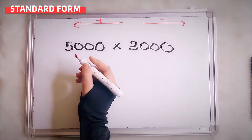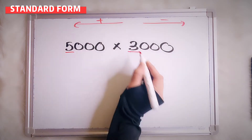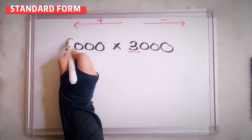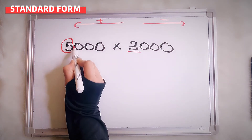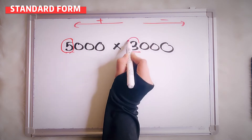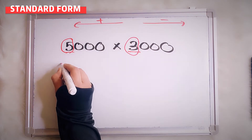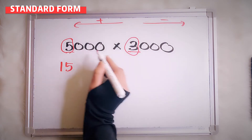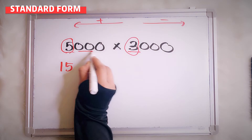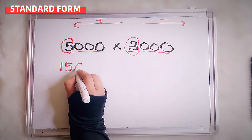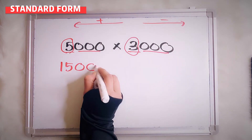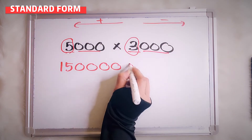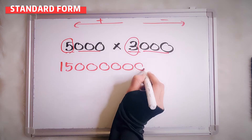Focus on the number — multiply the numbers first. The first number here: 5 times 3 will be 15. So how many zeros? 3 plus 3, so 6. Count: 1, 2, 3, 4, 5, 6.